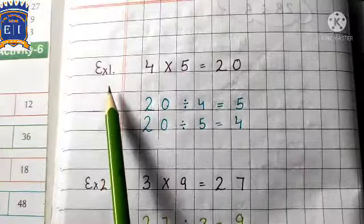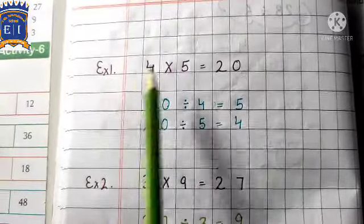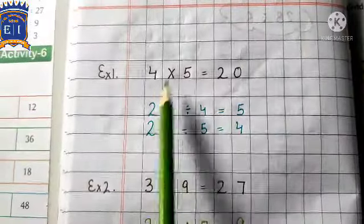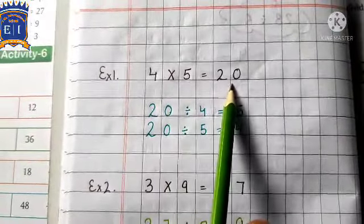Like this, dekho yahan par ye first example. We know that, hum jaante hain, 4, 5 sa kitne hote hain, 20. Okay, 4 multiplied by 5 is equal to 20.